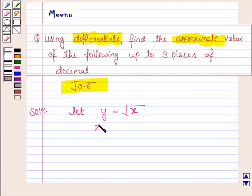Here we choose x plus delta x as the number itself 0.6 and we choose x as 1. Therefore delta x would be minus 0.4.